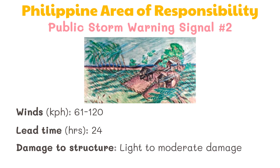In Signal Number Two, winds of 61 to 120 kilometers per hour may be expected in at least 24 hours. Light to moderate damage to structures may happen. During this period, avoid riding in small sea craft. Those who travel by sea and air should avoid unnecessary risk, and postpone outdoor activities of children.